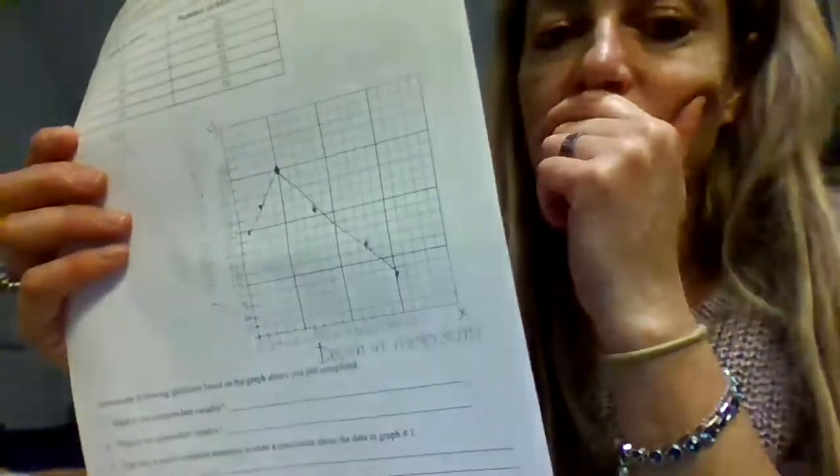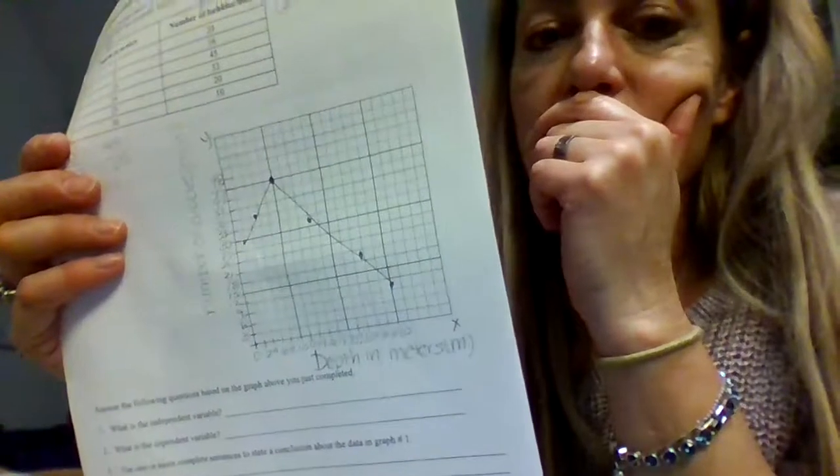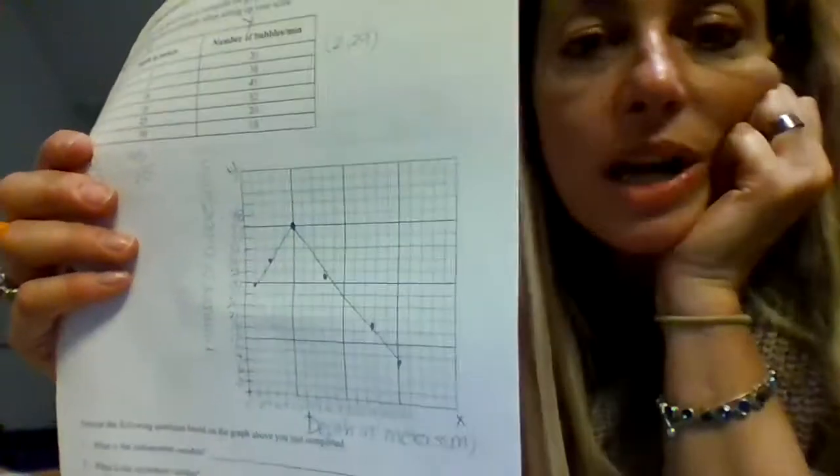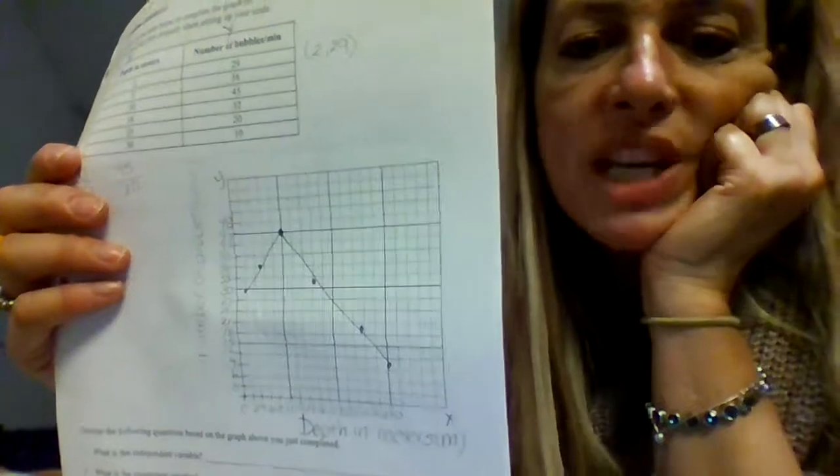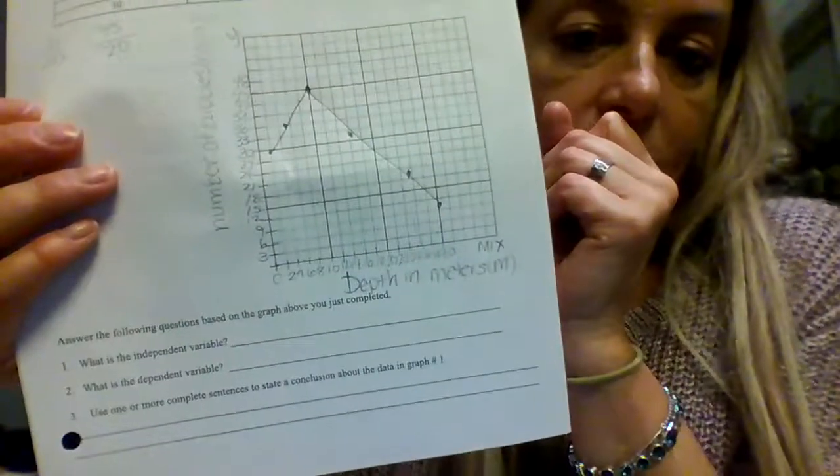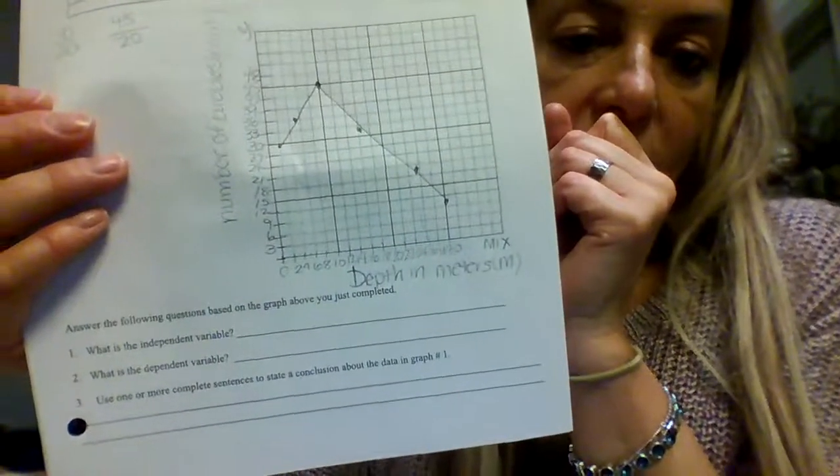All right. So now we're going to answer our questions. Question number one. What is the independent variable? Well, do you remember? Mix and try with an x and a y. Where do we write mix? Mix goes with the x. So put it in there. Mix. All right. So what does that mean? That means my manipulated independent variable is on the x-axis. So what's on the x-axis? Depth in meters. That's the independent variable. The independent variable is the one part of the experiment that you have the power to change. Depth in meters.